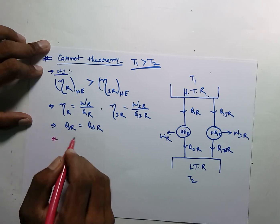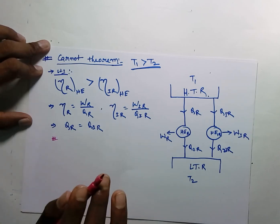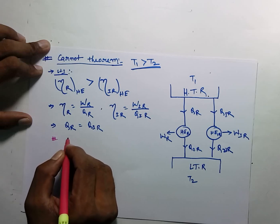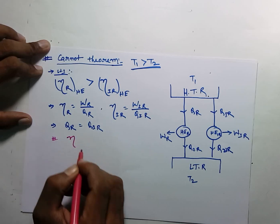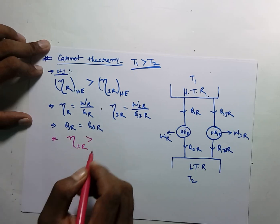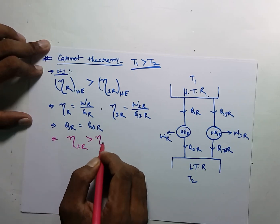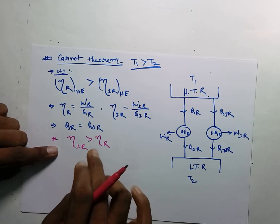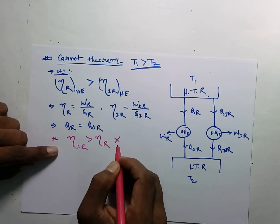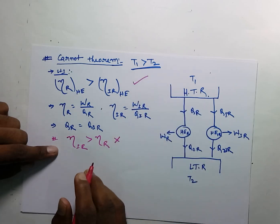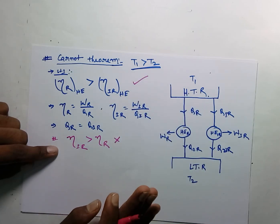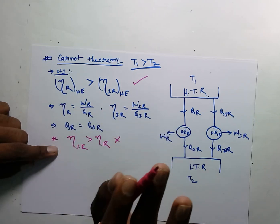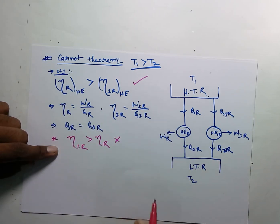For proving this statement, I am assuming that the efficiency of the irreversible heat engine is greater than the efficiency of the reversible heat engine. If we can prove that this assumption is wrong, then automatically the correct statement will be true. So I am going to prove this assumption is wrong.